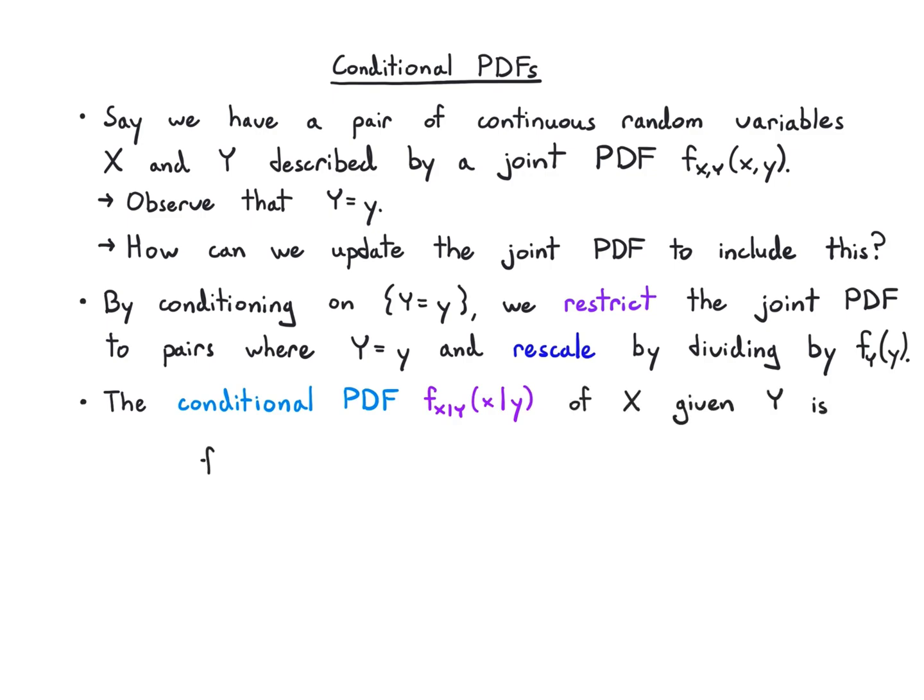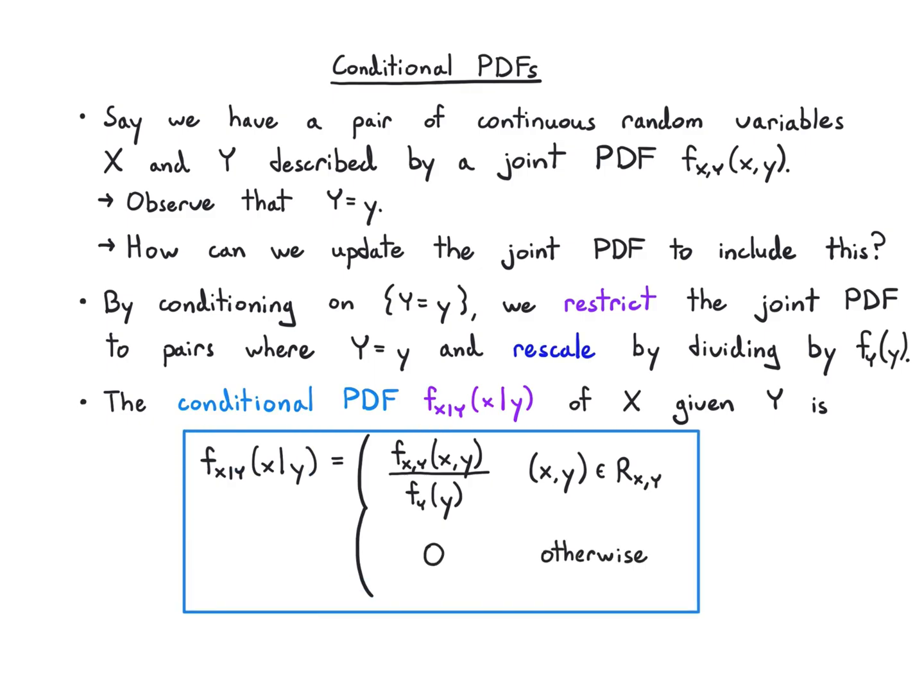And we denote that with this bar, and we just write that as the joint PDF divided by the marginal PDF of y in the range, and zero otherwise. And it's important to note that once you plug in the value of y on the right hand side here, you are restricting everything to values pairs where that's true. And then to get the correct probability in that restricted region you're rescaling by the density of probability at that particular y. But because you could observe any value of y in the range, then this conditional PDF actually is also a function of y because it can adapt to whatever value you see.